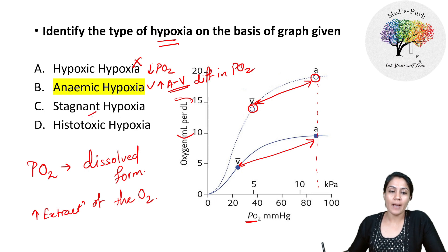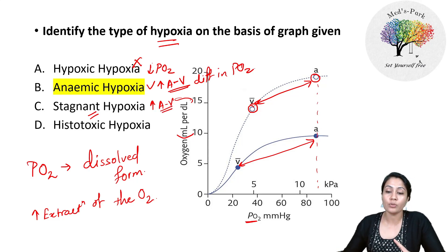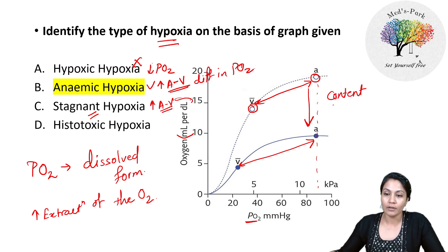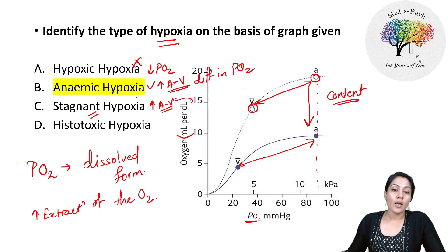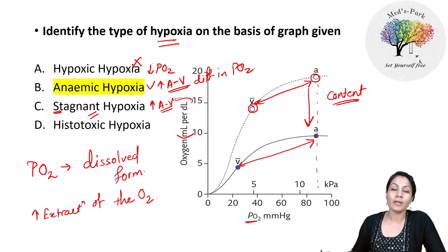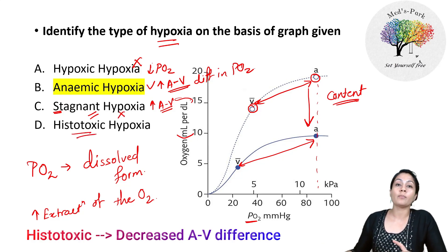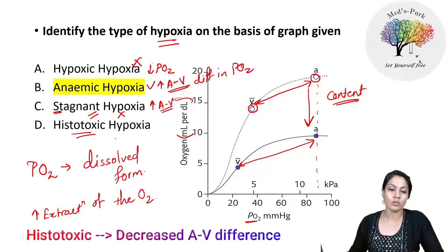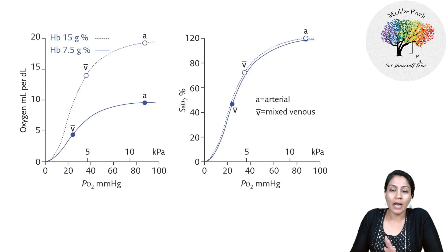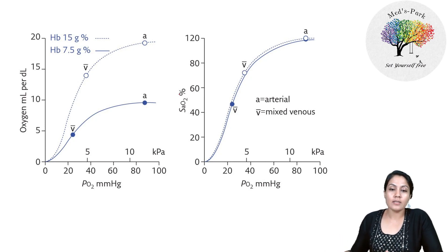In stagnant hypoxia, the AV difference in partial pressure of oxygen also increases, but the content of oxygen in ml per deciliter is normal — the problem is in the circulatory system, not hemoglobin. In histotoxic hypoxia, the problem is in the tissues not being able to utilize oxygen. So the answer is anemic hypoxia. This relates to the normal graph discussed in the context of Haldane's effect — but remember, that graph uses oxygen saturation percentage, not content.